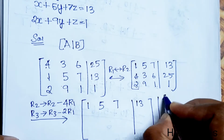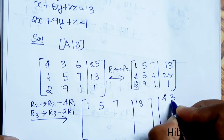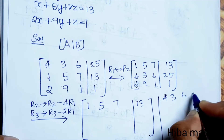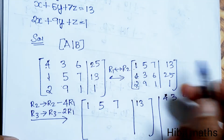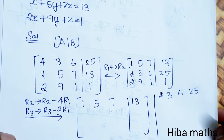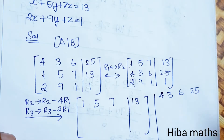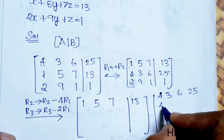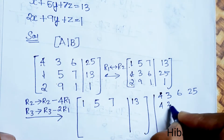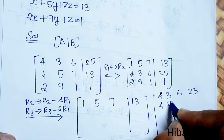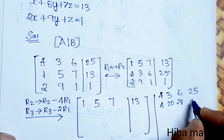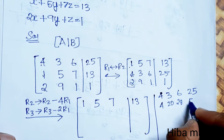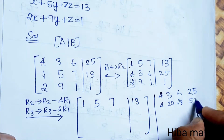Computing R2 minus 4 times R1: R2 is 4, 3, 6, 25. Four times R1 is: 4×1=4, 4×5=20, 4×7=28, 4×13=52. So the new R2 entries become: 4-4=0, 3-20=-17, 6-28=-22, 25-52=-27.